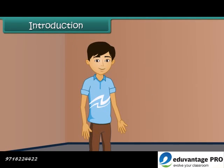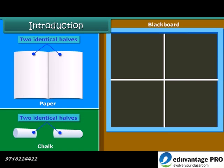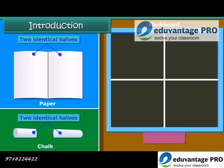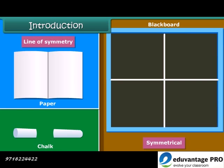Hello children, you may have found that on folding or cutting some objects like blackboard, chalk, paper along a particular line, we get two identical halves. These objects are called symmetrical and the line along which the object is folded is called the line of symmetry. Today let us learn more about symmetry.